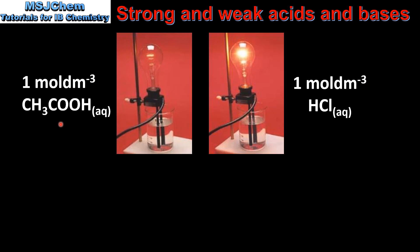Let's start by looking at electrical conductivity. In the beaker on the left we have a one mole per decimetre solution of ethanoic acid. In the beaker on the right we have a one mole per decimetre solution of hydrochloric acid. Ethanoic acid is a weak acid and it partially ionizes in solution. Hydrochloric acid is a strong acid which completely ionizes in solution.